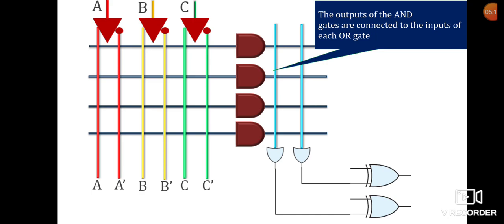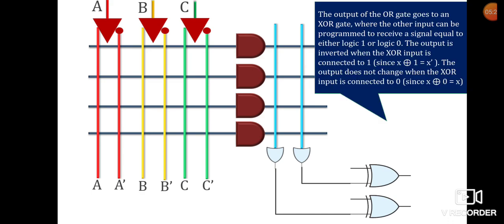The purpose of the XOR gates is to get the true value or complemented value of the function. The output of the OR gates goes to an XOR gate where the other input is connected to zero or one. If you want the true value of the function, connect the other input of XOR to zero. If you want the complement of the function, connect the other input of XOR to one — the output is inverted when the XOR input is connected to one.